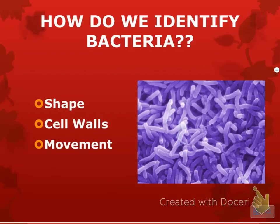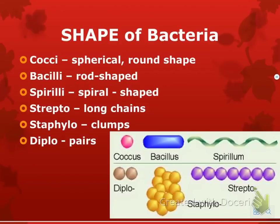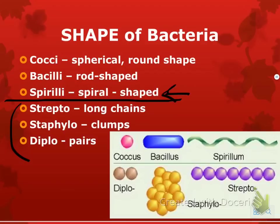How do we identify bacteria? There are three major ways: shape, cell walls, and movement. For shape, there are six categories — usually paired together. The first three are shapes: cocci is spherical and round, bacilli is rod-shaped, and spirilli is spiral. Spirilli is easy to remember because it looks like 'spiral,' but the other two you'll just have to memorize.